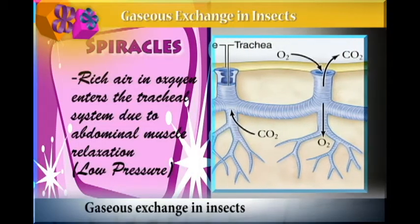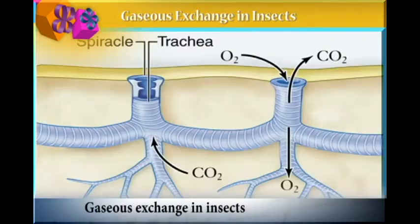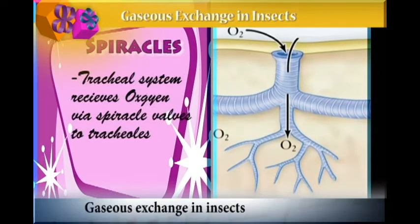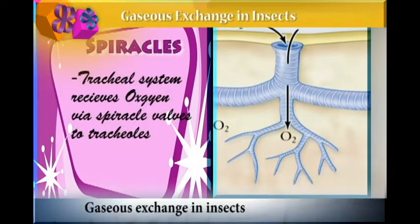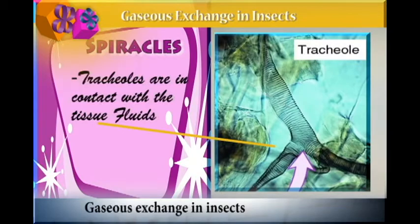When the pressure is low inside, air is forced to enter into the spiracle because the atmospheric pressure is higher than the pressure in the tracheal system. The tracheal system receives oxygen via the spiracles and then transports this oxygen to the tracheoles.